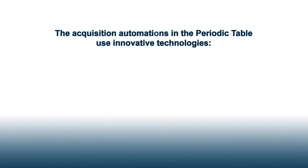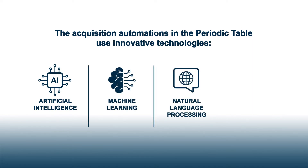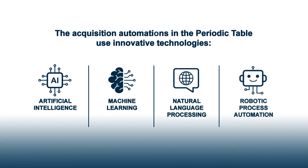The acquisition automations in the Periodic Table use innovative technologies such as artificial intelligence, machine learning, natural language processing, and robotic process automation to reduce human intervention in processes or improve decision making.